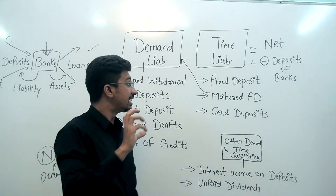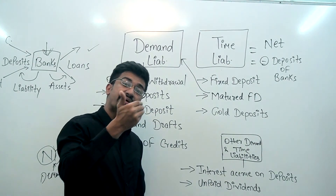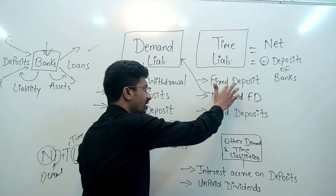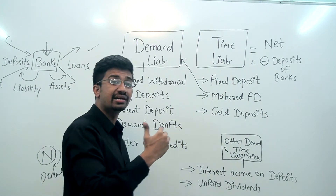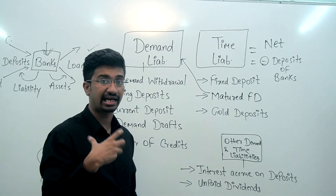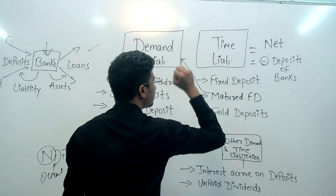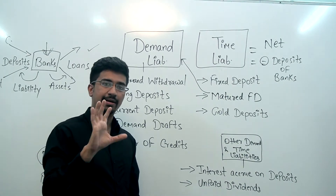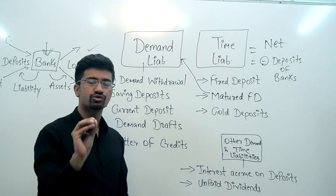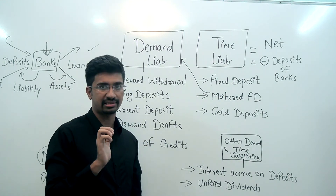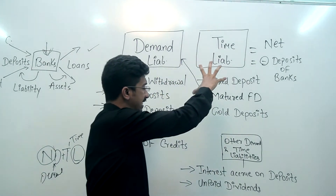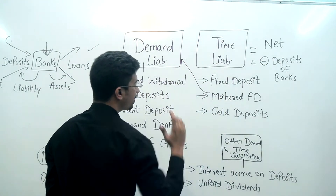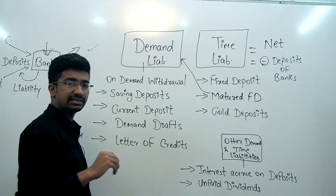एक और crucial point — ऐसा नहीं कि fixed deposit में आप एक time period के बाद ही आओगे। आप पहले भी जा सकते हो, it would hardly take 5 minutes to nullify your fixed deposit and take your amount back. मगर आप ऐसा generally नहीं करते। इसलिए इनको time liabilities में रखा गया है। Bank के पास calculations होनी चाहिए — जैसे time liability में 1000 करोड़ हैं तो bank मान के चलेगी कि अगले 3-5 साल तक 600 करोड़ कोई नहीं ले जाएगा। Gold deposits भी time liability में आते हैं।